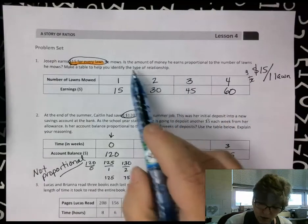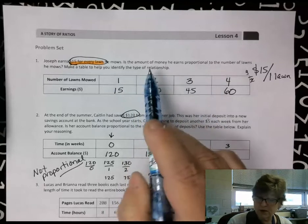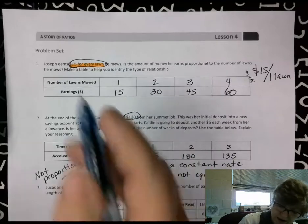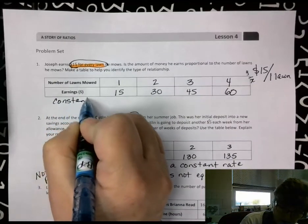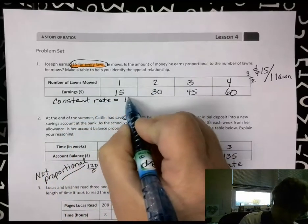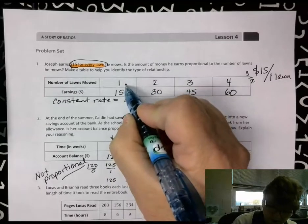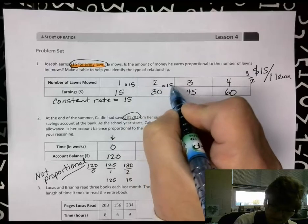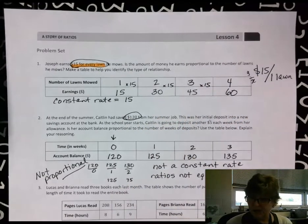So if I look at these, it wants to know is the amount of money he earns proportional. So again, going back to, is there a constant rate? Yes, there is. The constant rate is equal to 15. So each one of these is times 15.